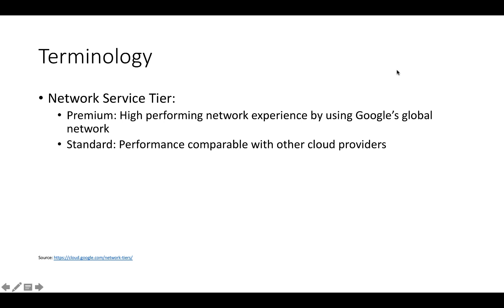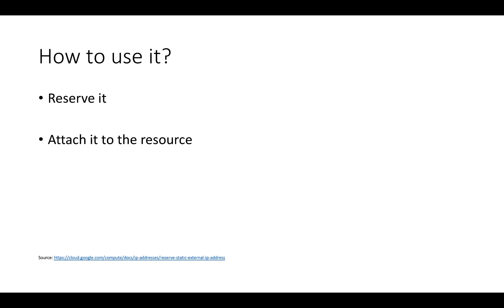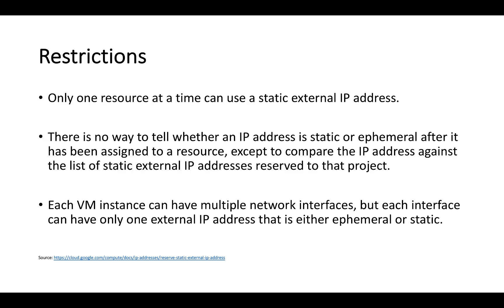Using it is pretty simple — you just reserve the IP address and attach it to the resource. There are some restrictions: you can only attach one external IP address to a resource at a time, and one resource cannot have multiple static IP addresses. There is no way to tell just by looking at the virtual machine instances whether a particular VM has a static IP address or just an ephemeral one.